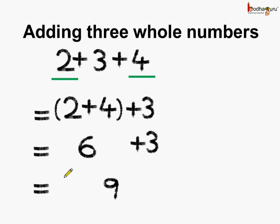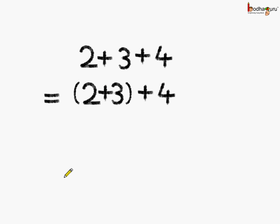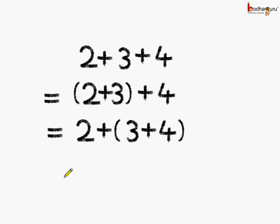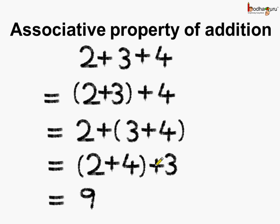We see that in all three cases where the grouping was different, we get the same answer which is nine. So what can we say? Whether we add two plus three first then add four, or add three plus four first then add two, or add two plus four first and add three — we get the same answer in all three cases, which is nine. This is called the associative property of addition.